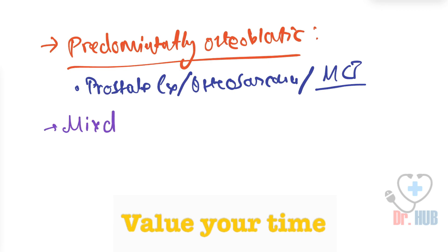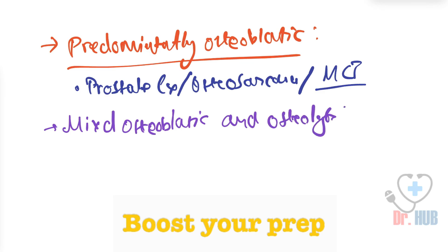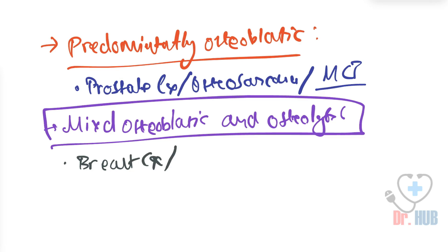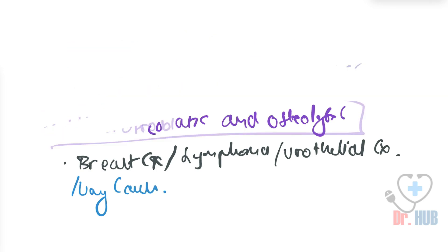Next is the mixed osteoblastic and osteolytic category. This includes breast cancer — with a preponderance toward the osteolytic — as well as lymphoma, urothelial carcinoma, and lung cancer.